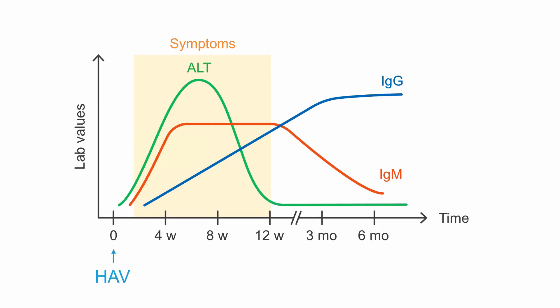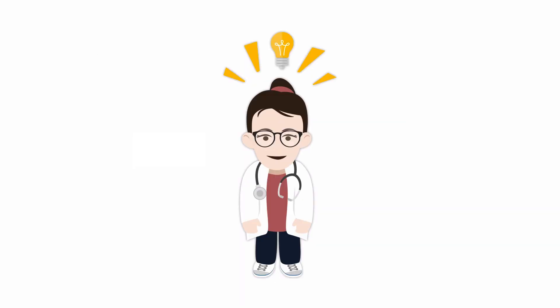There are also tests that can measure hepatitis A antigen or RNA in stool very early in the acute phase. These tests are not commonly used as this is of interest only in rare cases and these tests are only available in specialized laboratories. Now that we know how to interpret lab results in the context of infection phases, we can start working with some real cases.